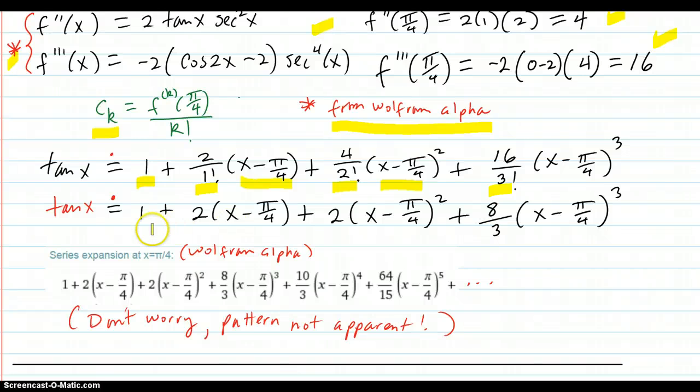So you reduce that down and you get this. 16 over 6 is 8 over 3. So those are the first four terms: 1, 2, 3, 4.